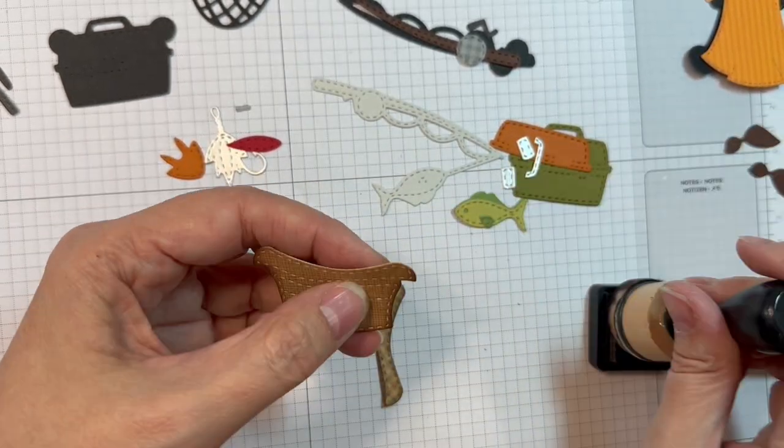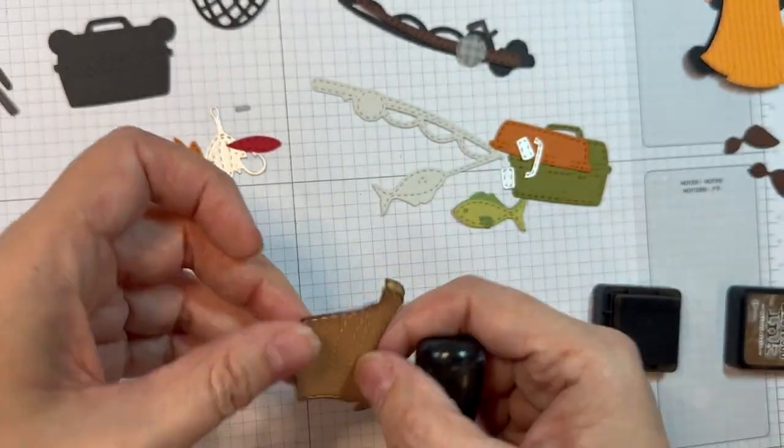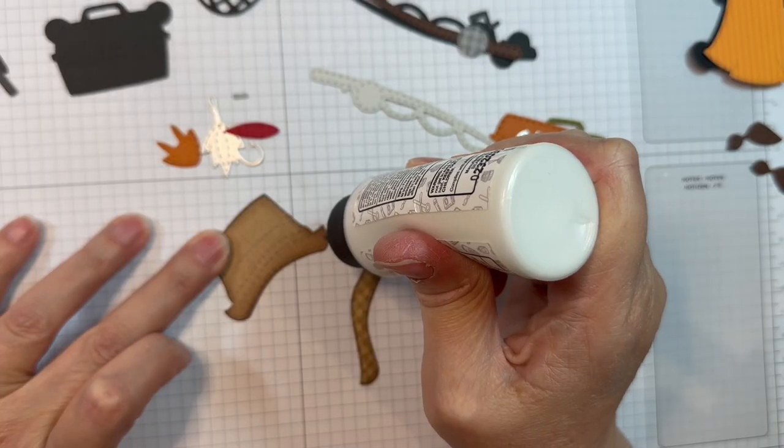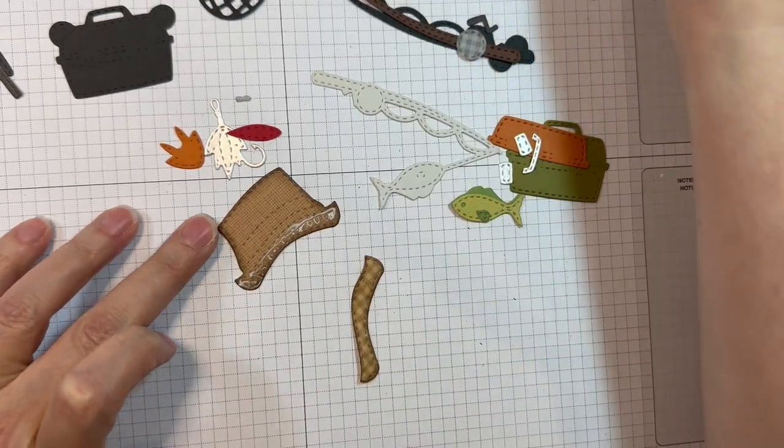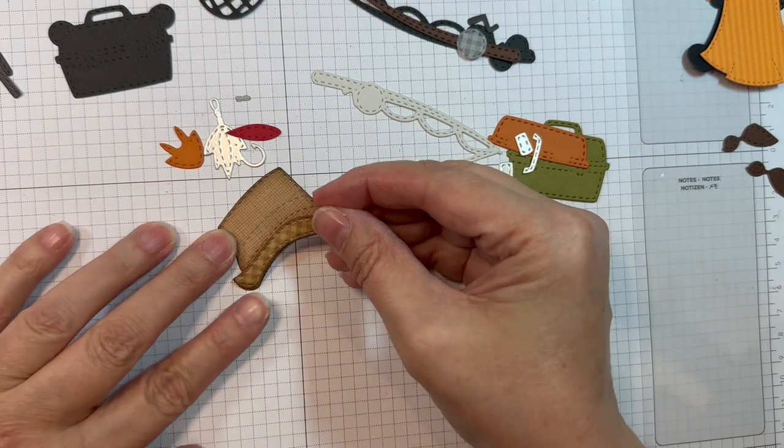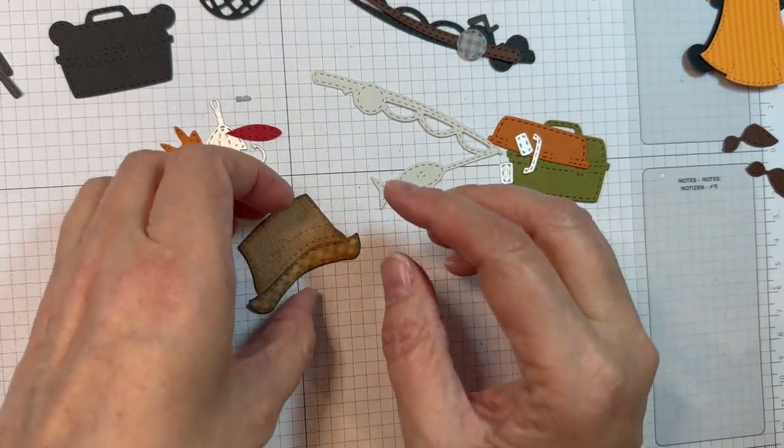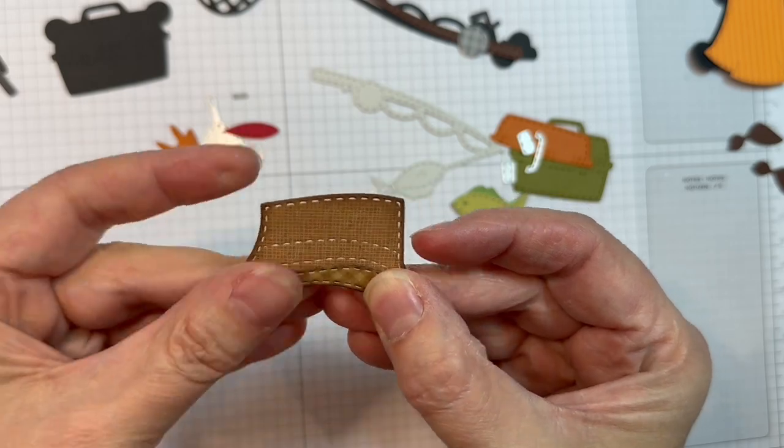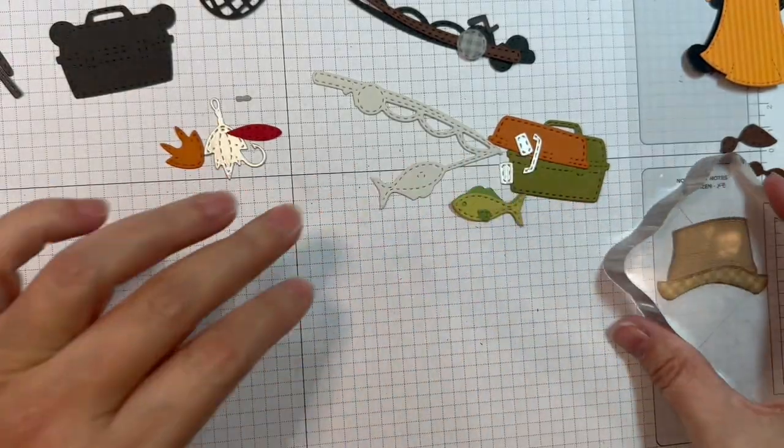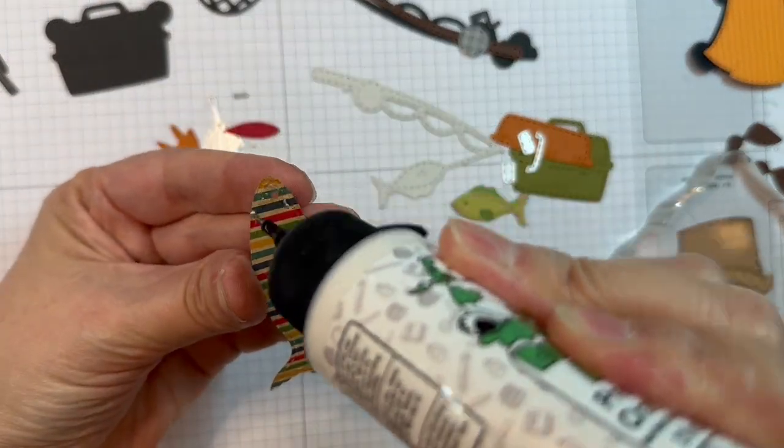So first I went ahead and I cut the hat out of the Gingham Linen Doodlebug in brown and I edged around it in Distress Ink and Walnut Stain and I'm going to stick it together using my Barely Art Glue. All my die cutting today was done with my Gemini, so I'm just lining that up. I'm using a reverse pattern on the flip-up part of the hat or the brim and I'm just going to weight that down.